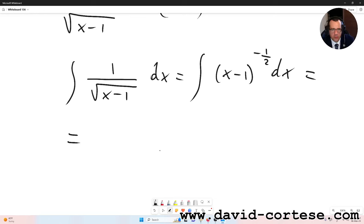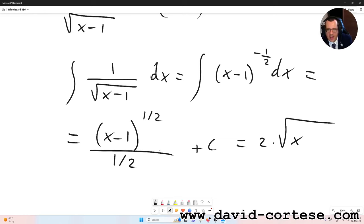x minus one raised to one over two, over one over two plus c. That is two times square root of x minus one plus c. Thank you for watching, see you next time, bye bye.